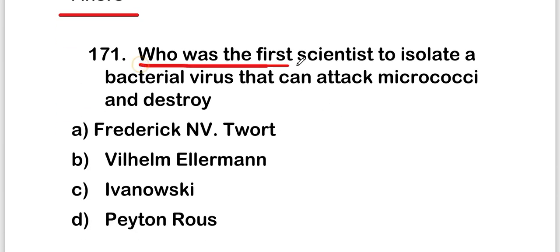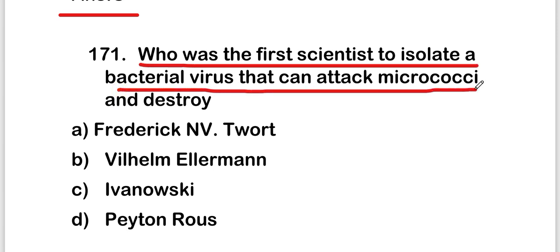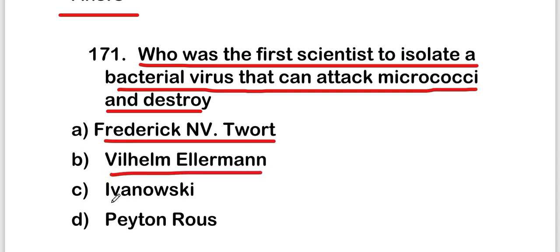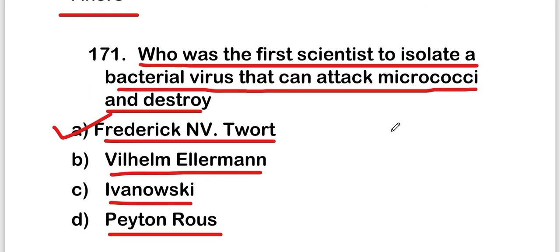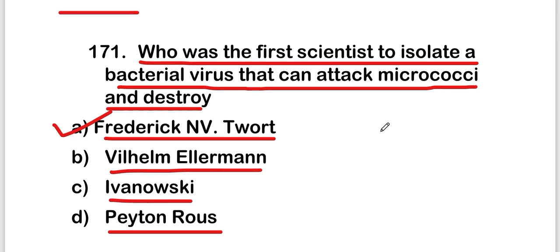Next question: who was the first scientist to isolate a bacterial virus that can attack micrococci and destroy them? Options: Frederick Twort, Wilhelm Ellermann, Ivanovski, or Peyton Rous. The right answer is option A — Frederick Twort, the first scientist to isolate a bacterial virus that can attack micrococci and destroy them.